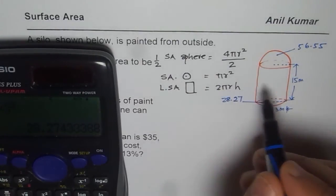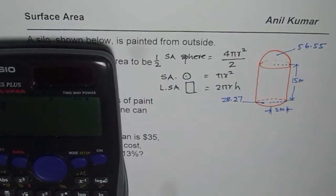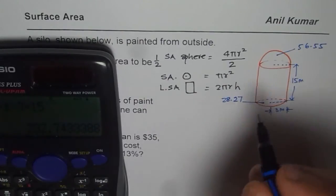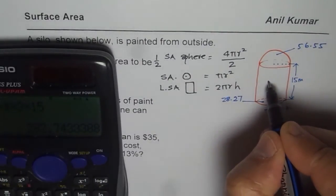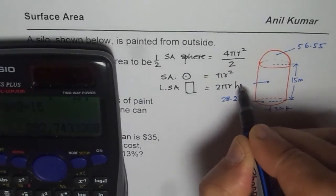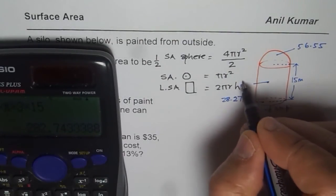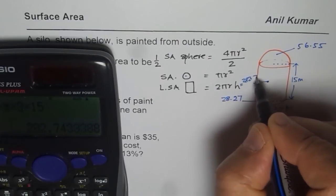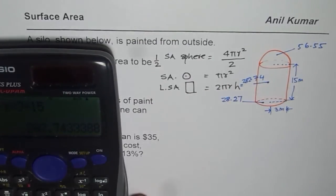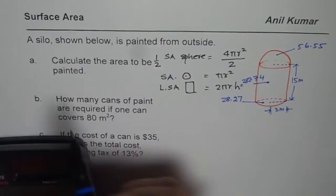Now let's find the lateral area which is 2πrh. So 2 times π times radius 3 times height 15, that gives you 90π. So this area plus this area is equal to 282.74.